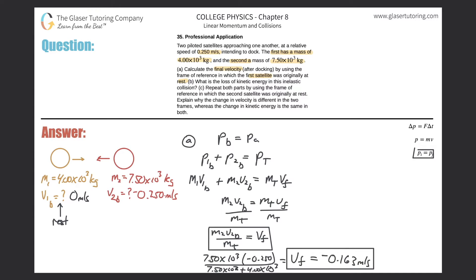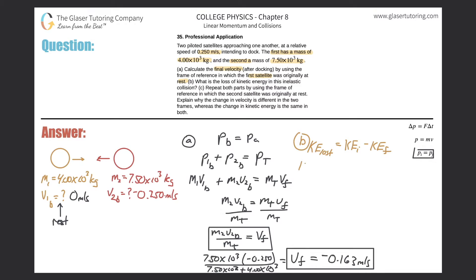For letter B, calculate the loss of kinetic energy in this inelastic collision. Kinetic energy lost equals initial kinetic energy minus final kinetic energy - like figuring out how much money you lost at a casino: if you started with 100 and left with 80, you lost 20. So KE lost = KE of satellite 1 initially plus KE of satellite 2 initially, minus final KE.